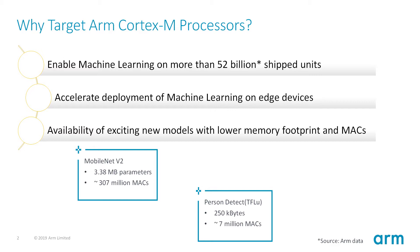For example, a MobileNet V2 in its floating point version is larger than 3 megabytes and uses more than 300 million multiply-accumulate operations. Whereas the person-detect model from TensorFlow Lite Micro, which is based on MobileNet, takes up 250 kilobytes of memory and around 7 million MACs in computation.